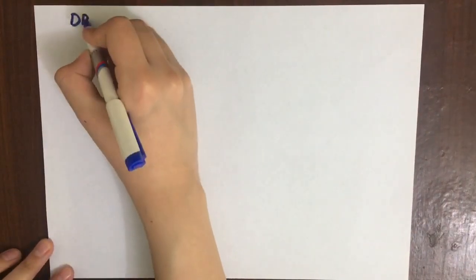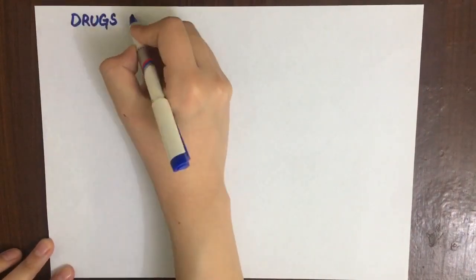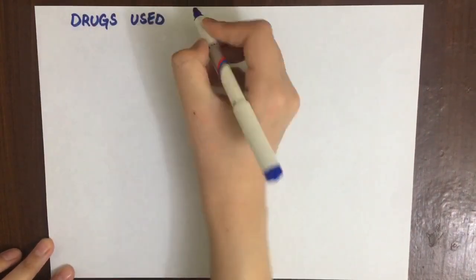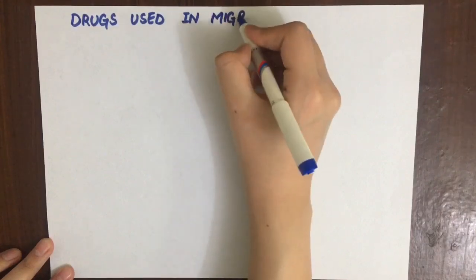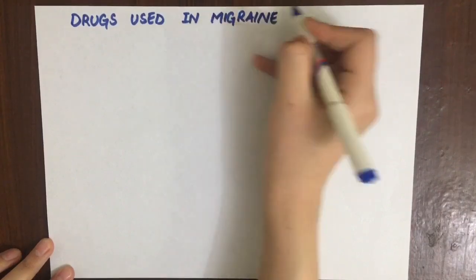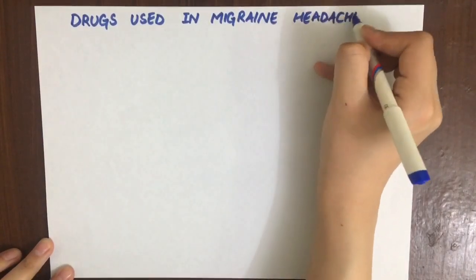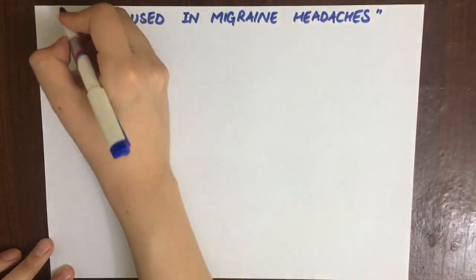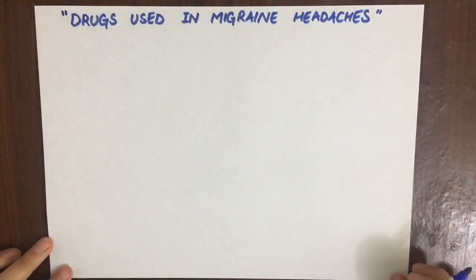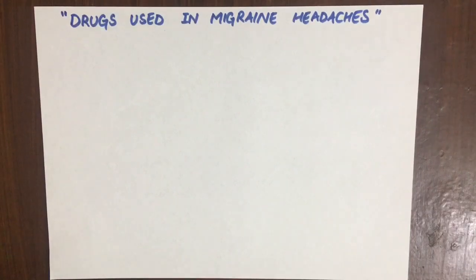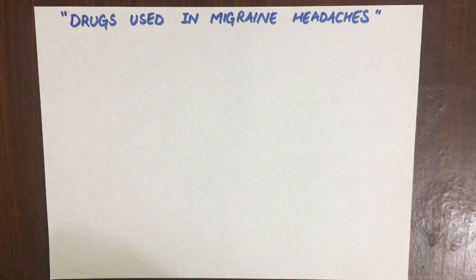In this video we are talking about the drugs used in migraine headaches. Migraine is a severe throbbing pain or a pulsing sensation usually on one side of the head, often accompanied by nausea, vomiting, and extreme sensitivity to light and sound.